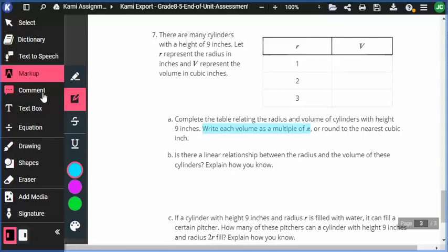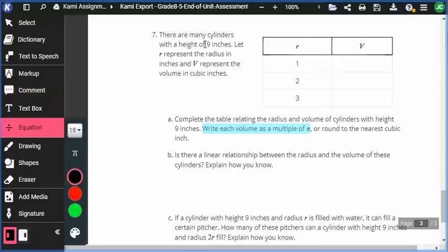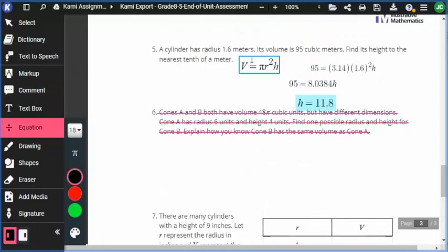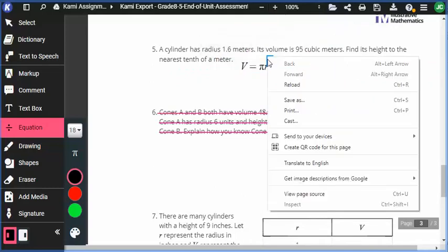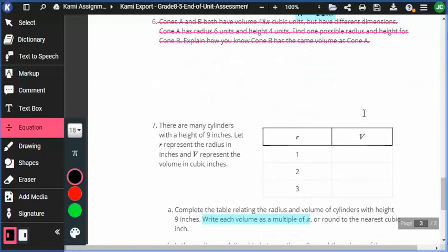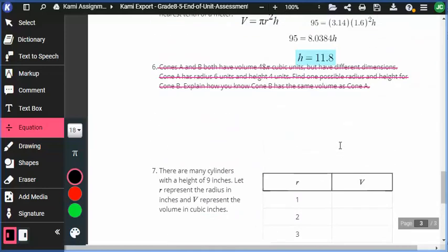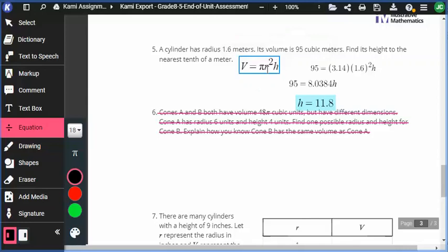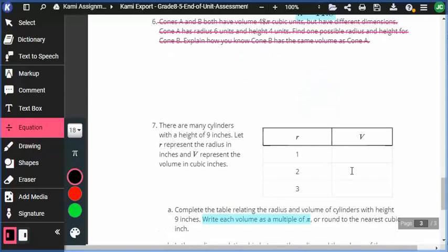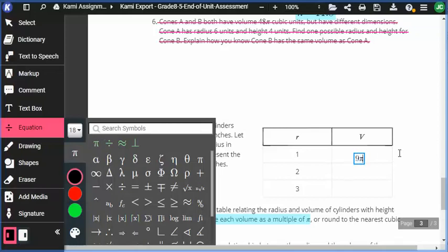All right. So if the radius is one, if the radius is one, height is nine, what will we get for the volume? Well, since it's pi r squared h, remember our volume formula? Pi r squared h. Volume is pi r squared h. So if the radius is one, it's going to be one squared times the height of nine times pi. So the volume in this case is going to be nine pi. Nine pi. So there's our volume.